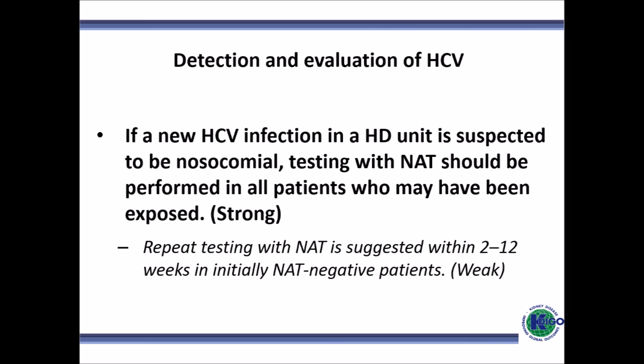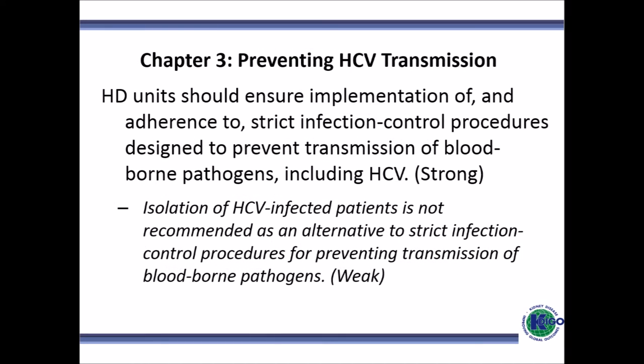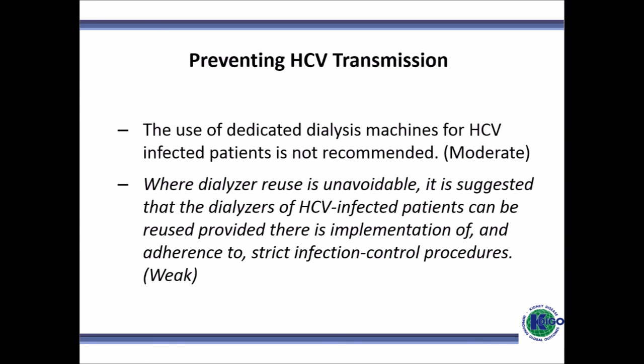This diagram illustrates the testing process already described. All units should ensure implementation of and adherence to strict infection control procedures. Isolation for hepatitis C is not recommended as an alternative to strict infection control procedures. The use of dedicated machines for hepatitis C, as per KDOQI, is not recommended. Wherever dialysis reuse is unavoidable, it is suggested that dialyzers be reused provided strict infection control procedures are implemented and adhered to.